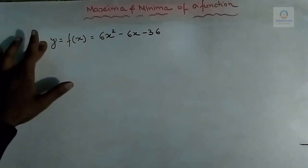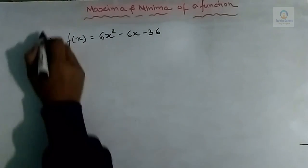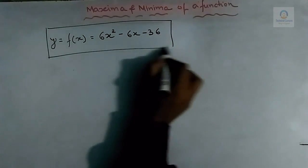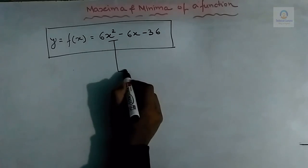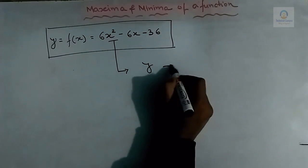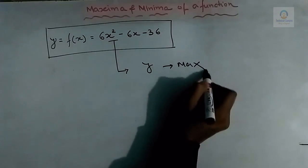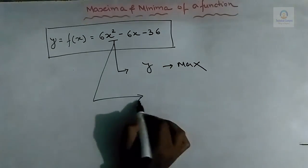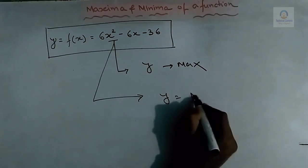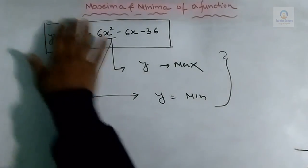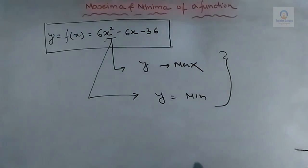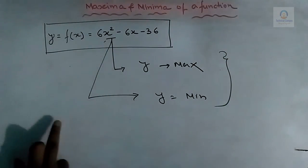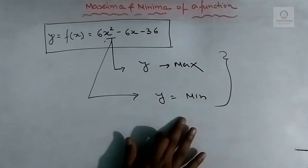Here x is the independent variable and y is the dependent variable. In the concept of maxima and minima, we have to calculate the value of x for which we get the maximum value of y, and in the concept of minima we have to calculate the value of x for which we get the minimum value of y.